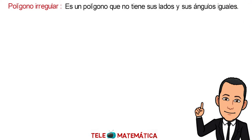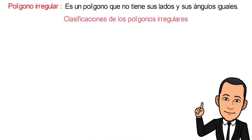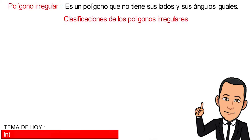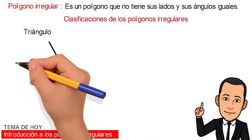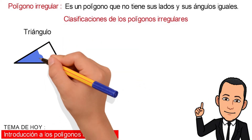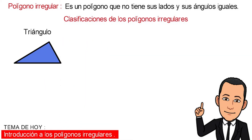Next, we will introduce some of the classifications of the regular polygon. In first place, the triangle, that is defined as three sides. In this case it would be a scalene triangle.